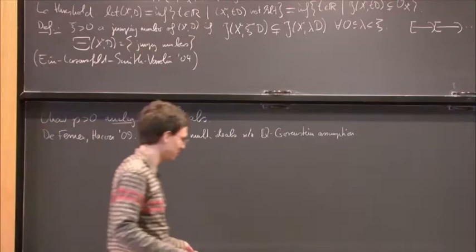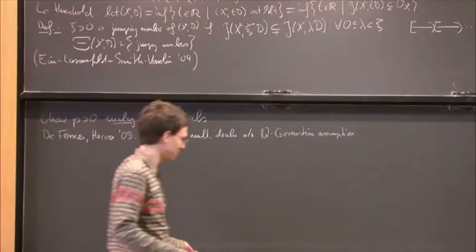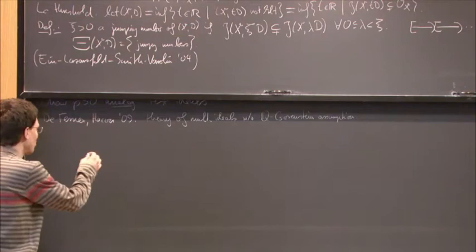Such a theory was developed by Tommaso de Fernex and Chris Hacon in 2009 — a theory of multiplier ideals without a Q-Gorenstein assumption. There still is the assumption that X is normal, though you could also do a version without normality, but for simplicity let's stick to the case X is normal. We do not assume that K_X is Q-Cartier or anything. The natural question that arises is to study the jumping numbers in this more general context.